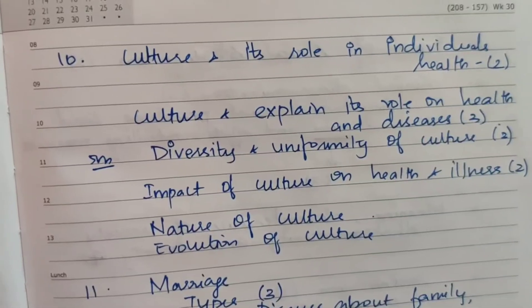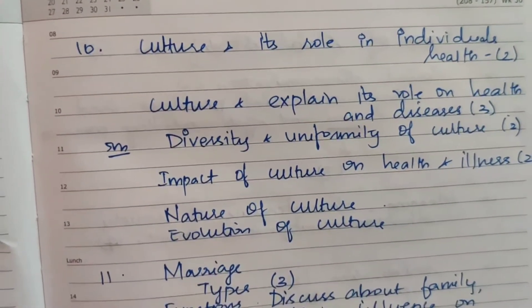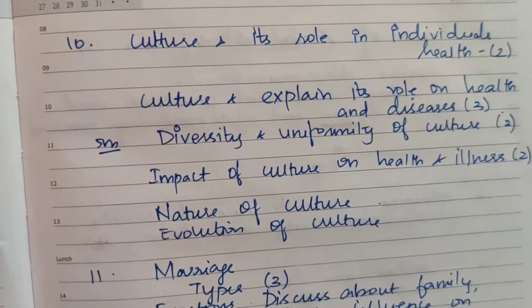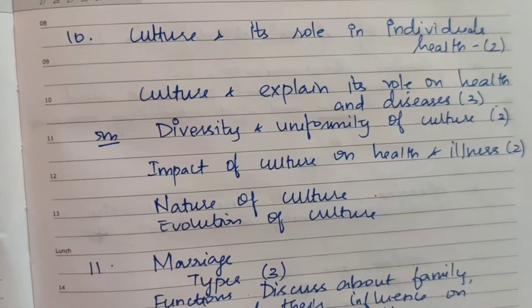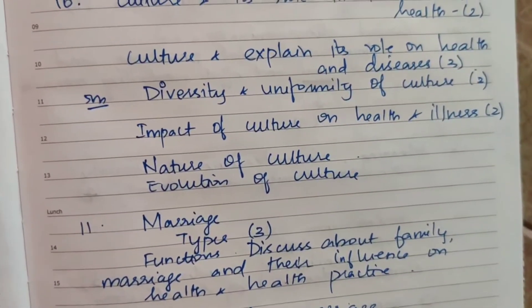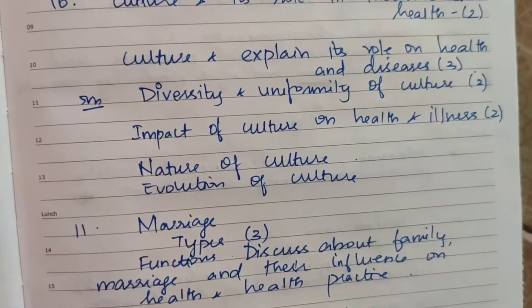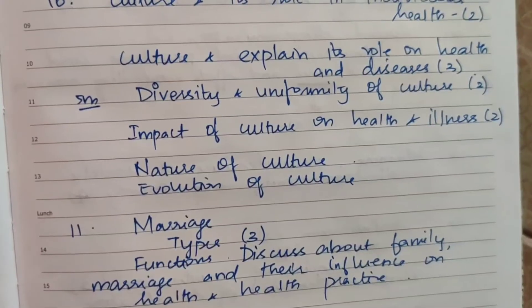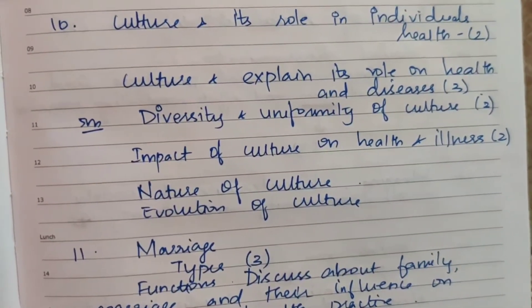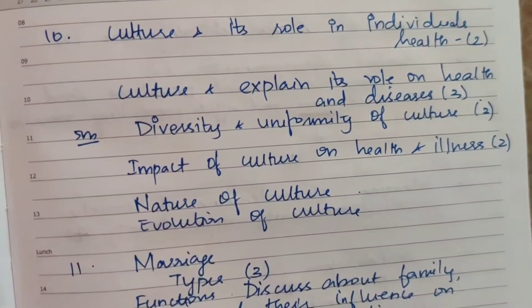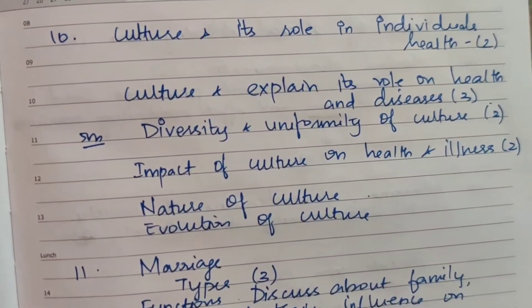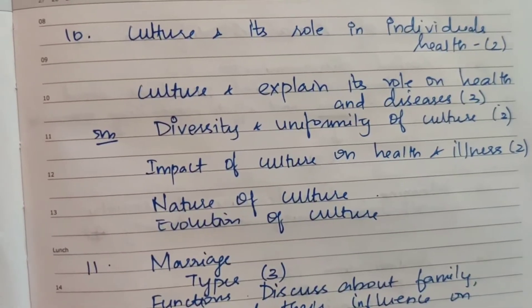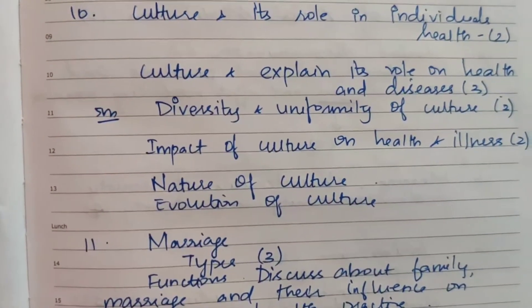Tenth question: Culture and its role in individual health — asked 2 times. Culture and explain its role on health and diseases — asked 3 times. For 5 marks: diversity and uniformity of culture asked 2 times. Impact of culture on health and illness asked 2 times. Nature of culture and evaluation of culture also asked.